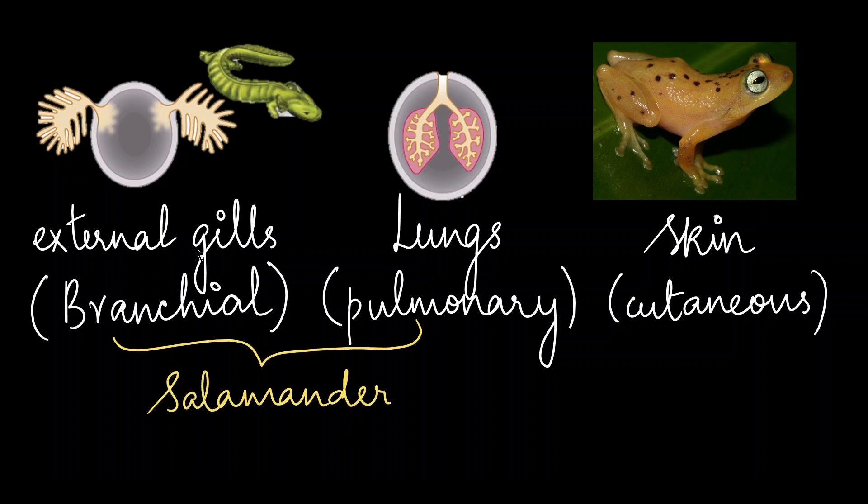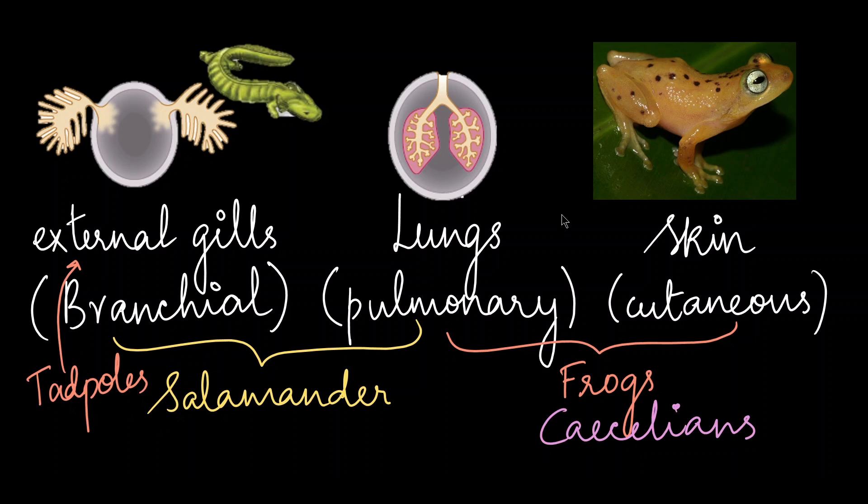Salamanders have external gills as well as lungs as their respiratory structures. Tadpoles rely on gills initially and then when they grow up to be an adult they grow lungs as well as are able to breathe through their skin. The worm-like amphibian, the cecilian, they are also able to breathe through the lungs and the skin.